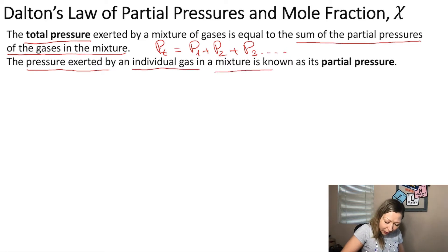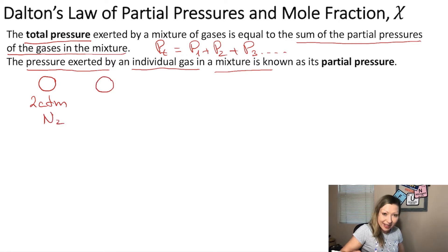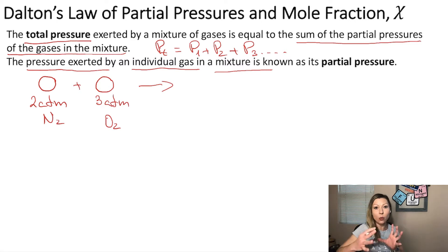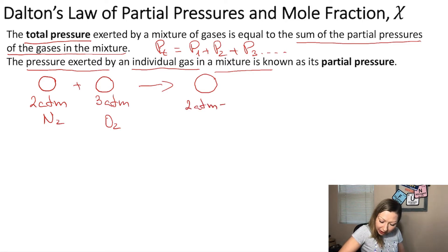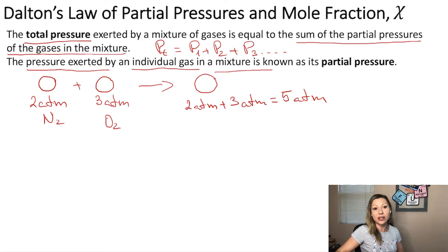Let's look at an example. Say I have a vessel containing two atmospheres of nitrogen gas, and the same vessel contains three atmospheres of O2 gas. If I mix the two gases in one vessel with the same volume, the total pressure equals the sum of the partial pressures — 2 atm plus 3 atm — giving a total of five atmospheres for the N2 plus O2 mixture.